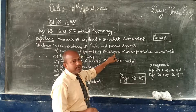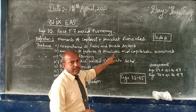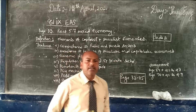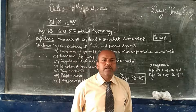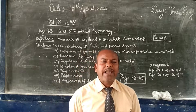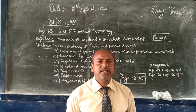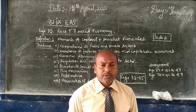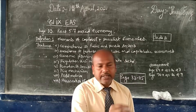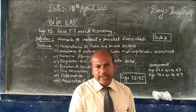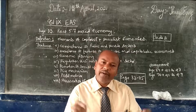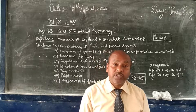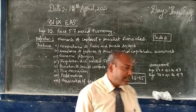Characteristic number two is the coexistence of features of socialistic and capitalistic economy. As clearly mentioned in the definition, mixed economy combines the characteristics of both the capitalist and the socialist economy. So not only do private and public sectors coexist, but every feature of both the socialistic economy and the capitalist economy is followed.